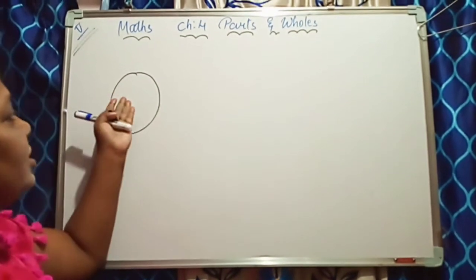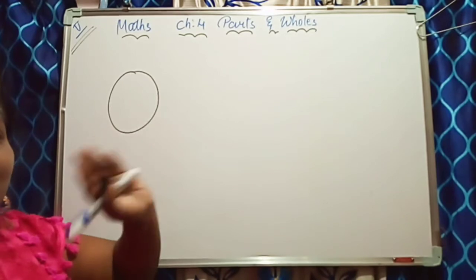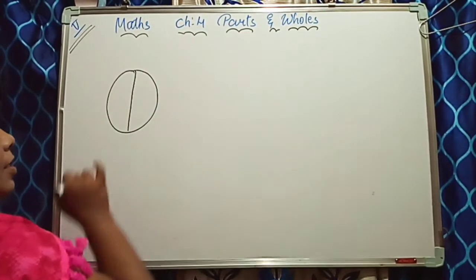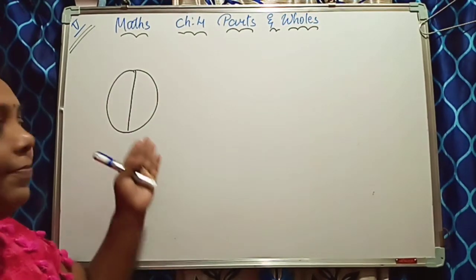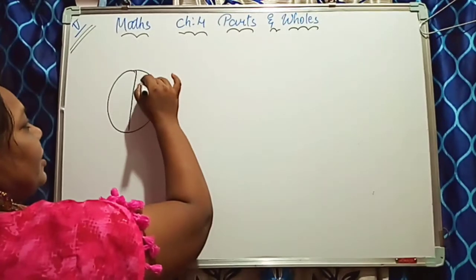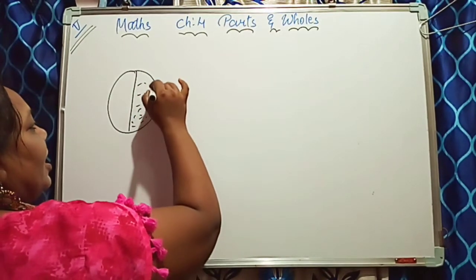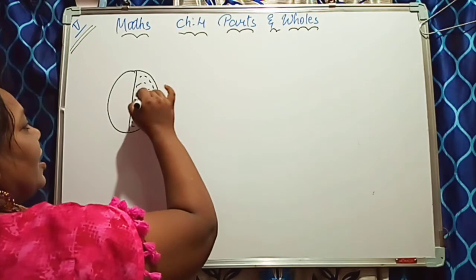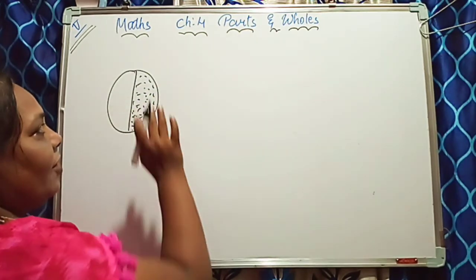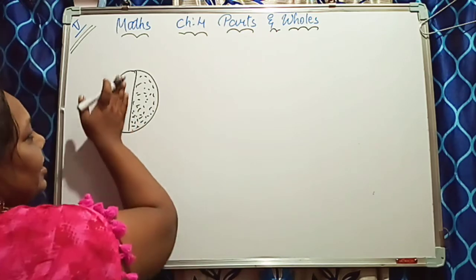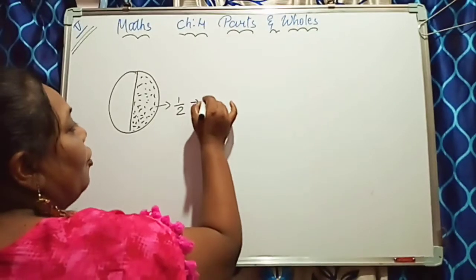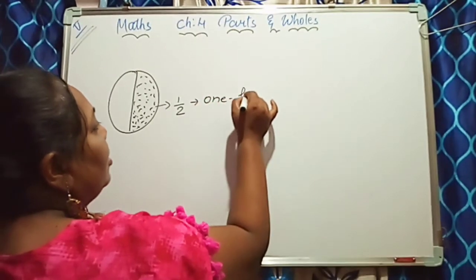In this, it is a whole — I have not made any parts, it is a whole only. If I divide it like this, what is this? Half part. So this half part I have shaded — I have dotted it because with a whitener I can't shade. Half part I have dotted and half part is plain. So this half part we say 'half' or 'one half'.